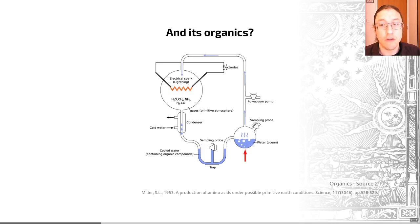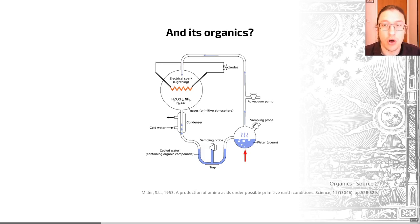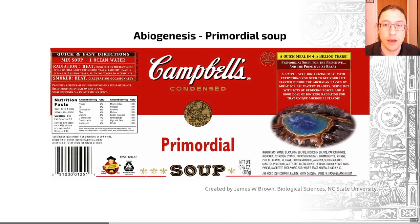Urey and Miller's original choice of environment may have been a bit too reducing — the early atmosphere is still a matter of debate — but this experiment works with a range of different environments. So this is a second source for organic compounds on early Earth.